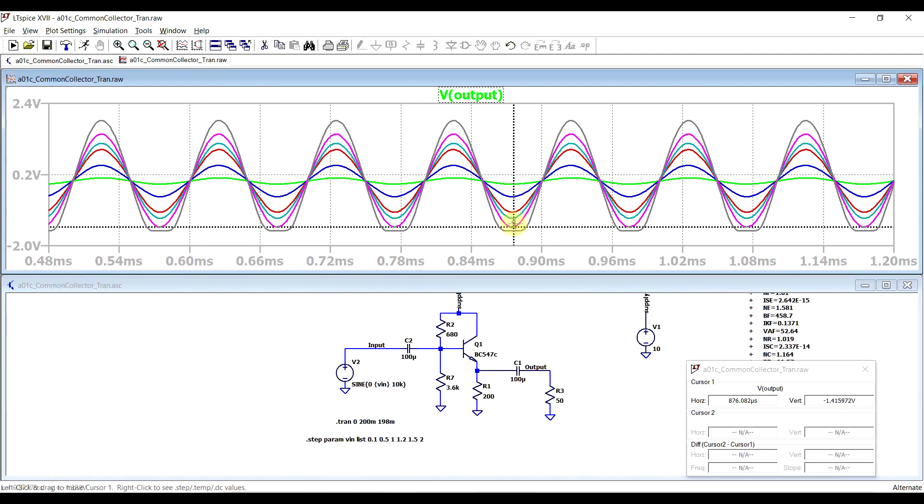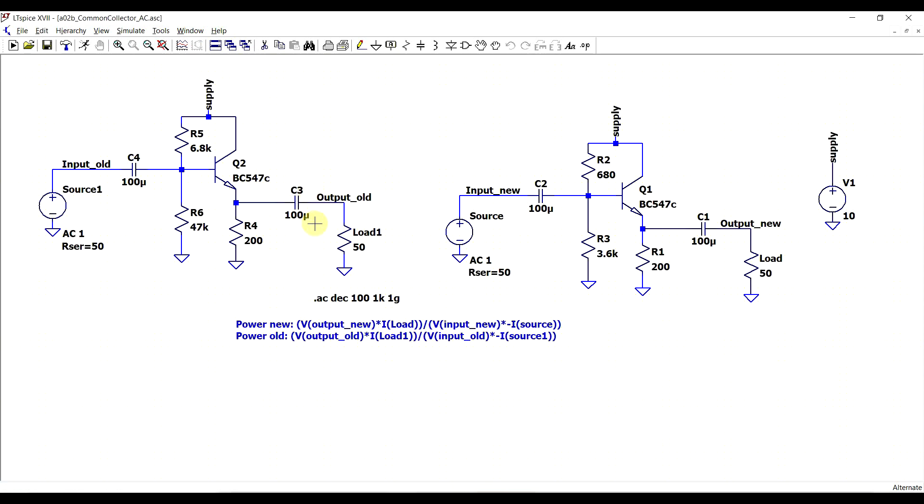If we look at our output signal using the same input signals that we've had before, we can see that the last signal that passes unaltered is this pink one, the 1.5 volt one, and with higher values we start running into distortion just like before.